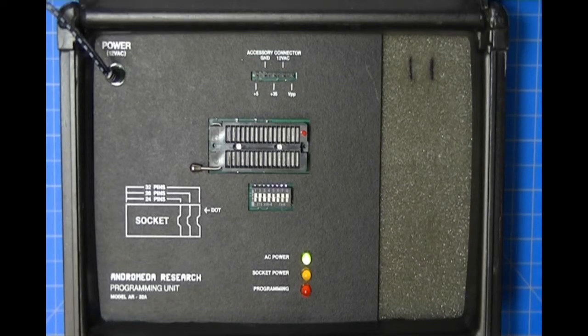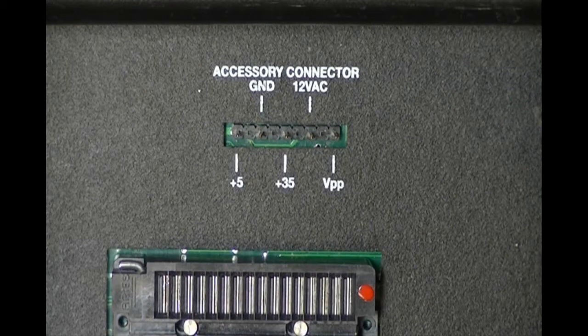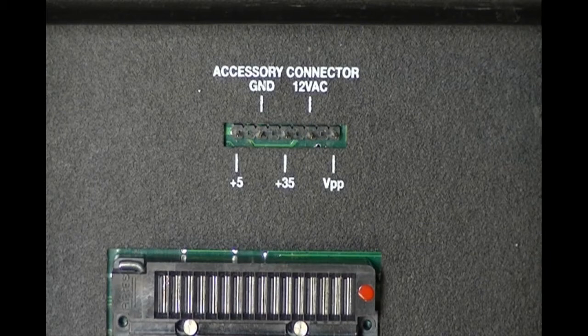Here's the accessory connector. You can see that it has five individual pins, and the pins are five volts, ground, plus 35, 12 volts AC, and VPP.